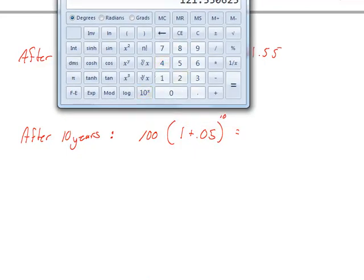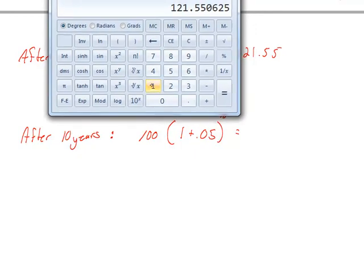That's the advantage of finding a formula for doing this calculation. Now I can jump ahead and say I'm going to put that investment in there for 10 years. And I know after 10 years that I'm going to have $162 and roughly 89 cents.